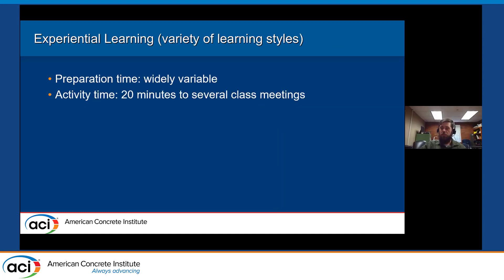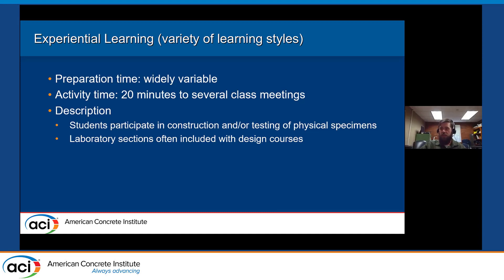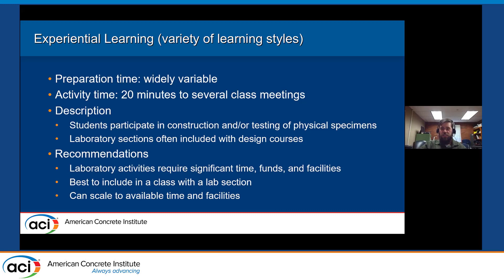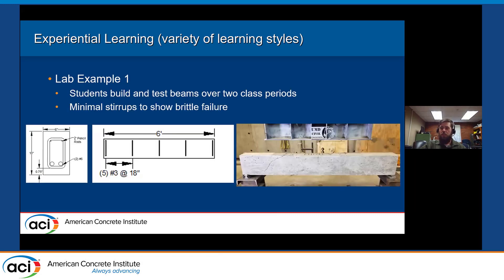Another strategy related to experiential learning is a beam design and testing project. This can take a lot of time or you can scale it down to a small demonstration. Students participate in construction and/or testing of physical specimens. It does take some time, effort, and funds, and is best if you already have a lab section with the class — but you can scale it down to a single class period or smaller lab. One example from our paper: students are given the beam design specifically related to shear with an overly large stirrup spacing and a smaller spacing, they build the beam in one class and test the cured beams in another class.